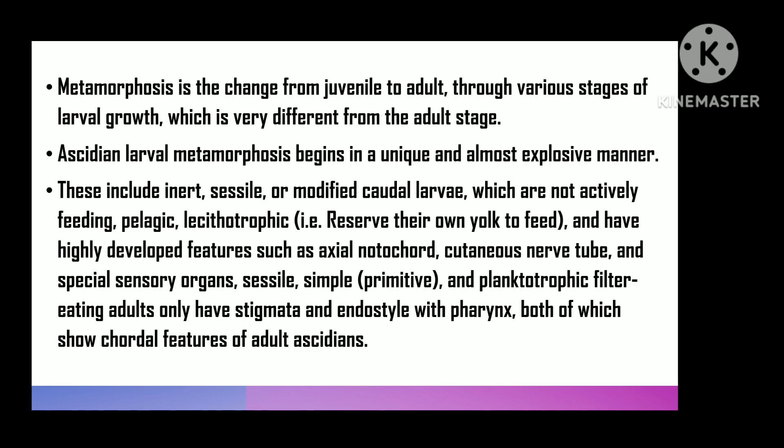In retrogressive metamorphosis, the larva possesses advanced characteristics which are lost during development, and the adult is either sedentary or degenerated with primitive characteristics. Retrogressive metamorphosis is a characteristic of ascidians or tunicates of urochordates.